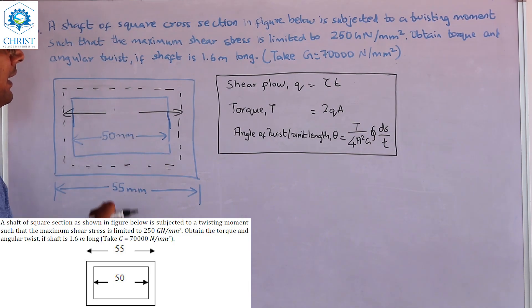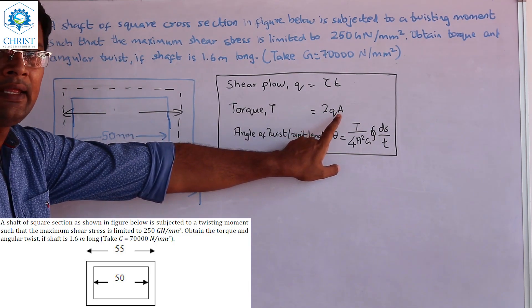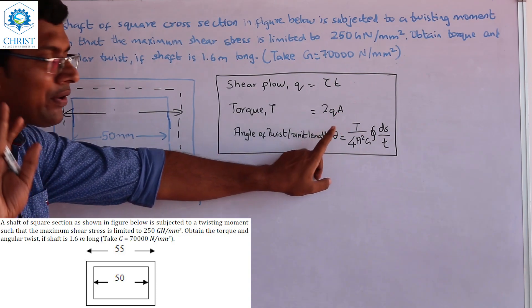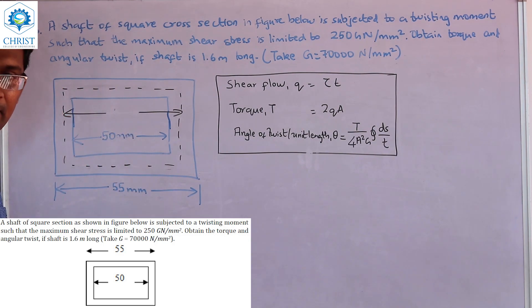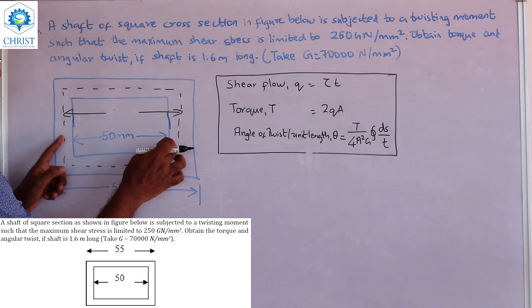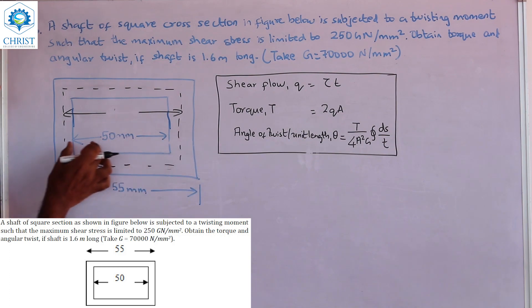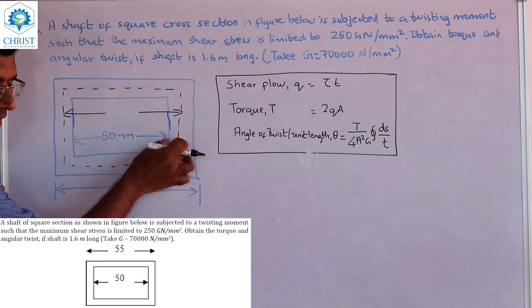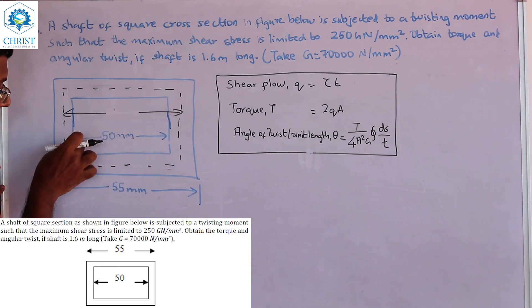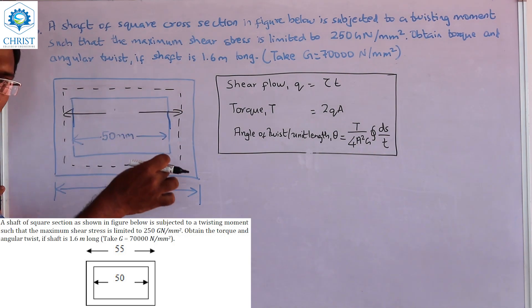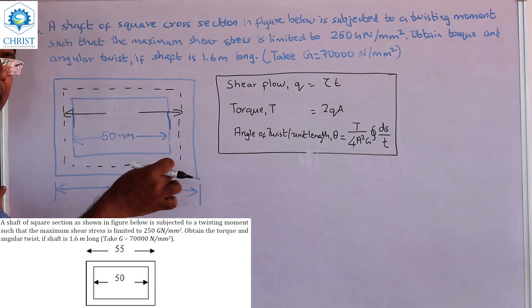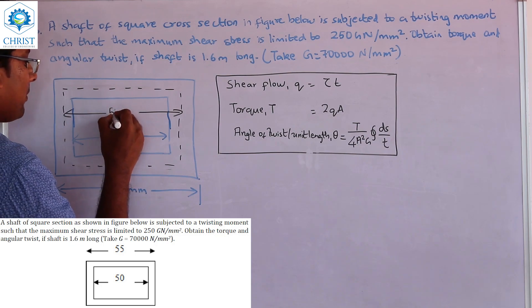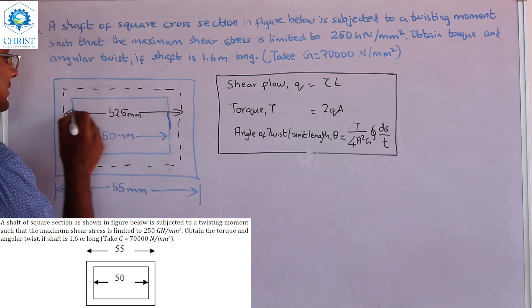The outer dimension is 55mm. Now we calculate: 2.5 divided by 2 gives 1.25. So 50 plus 1.25 plus 1.25 equals 50 plus 2.5, giving a center-to-center distance of 52.5mm.